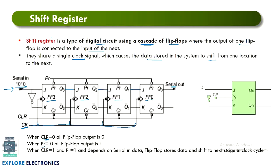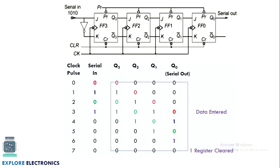Two signals to understand here are the clear signal and the preset signal. The clear signal clears the output to zero, and the preset signal makes the flip-flop output preset to one. Because of the bubble in the circuit, these signals work on zero input: when clear is zero, output is cleared; when preset is zero, output is preset to one. The shift register operates normally when clear and preset are both one.